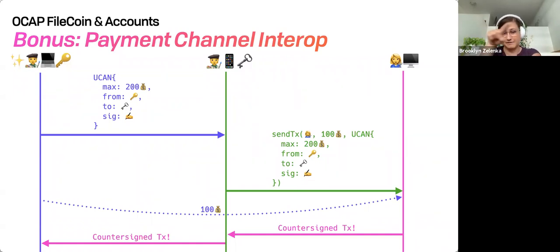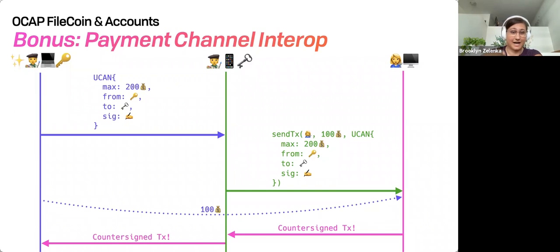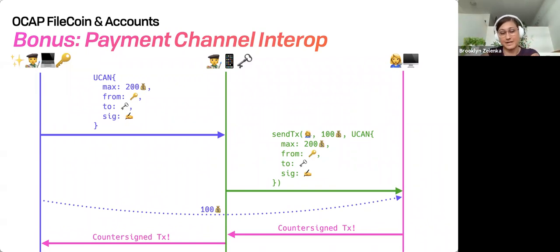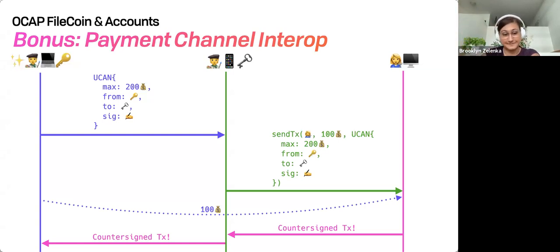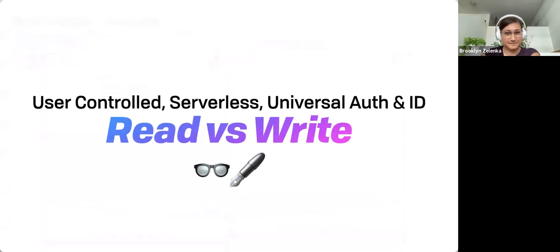This can end up being a really nice way of not moving keys around and not having to open multiple channels — to say, I'm allowed to spend for so-and-so. And this doesn't have to be the same user either. I could say, Boris and I work together — I want him to be able to spend money for lunch — so I'll delegate to him the ability to pay the restaurant. So that's the UCAN section.